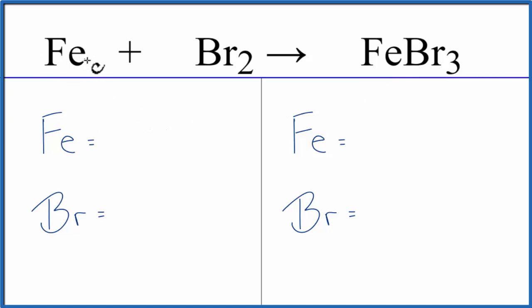Fe, we have one of those, two bromines. On the product side, one Fe and three bromines.